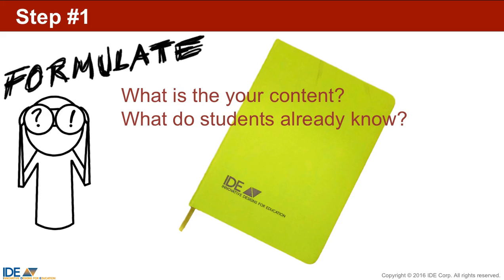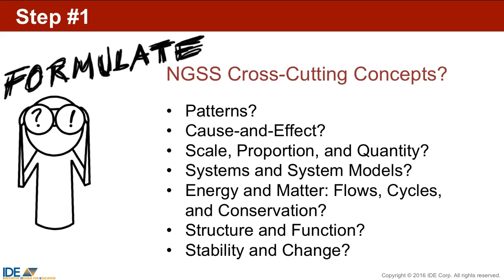Think about your students. I believe students are capable of accomplishing anything, so we're not going to focus on their perceived ability. But you do need to think about what they already know about this topic. Where is your starting point? Is this brand new information or have they had some background in a prior grade or earlier in the year? Think about the Next Generation Science Standards cross-cutting concepts and how you see any of these reflected in your content. Keep track of your thoughts in your design journal.